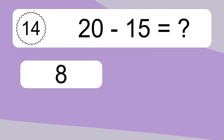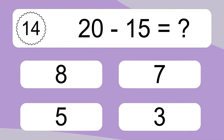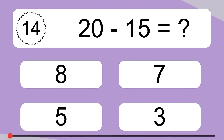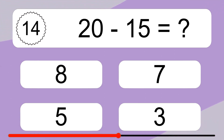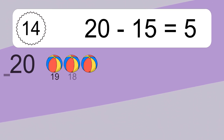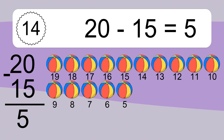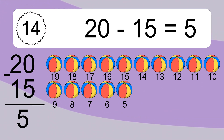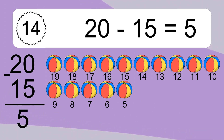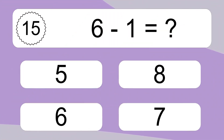20 minus 15 equals what? 20 minus 15 equals 5. Let's count it: 19, 18, 17, 16, 15, 14, 13, 12, 11, 10, 9, 8, 7, 6, 5.